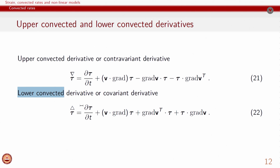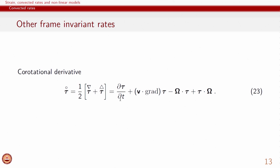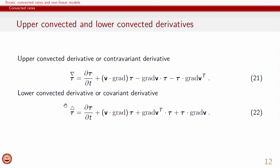The lower convected derivative can also be defined, and again it has three similar terms: rate of change of stress with time, rate of change of stress due to spatial variations, and contribution to the convected rate of stress due to deformation in the material. It is also possible to define other frame-invariant derivatives, each based on slightly different physical interpretations. For example, we could define a co-rotational derivative, which can be constructed by adding the upper and lower convected derivatives.